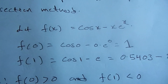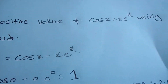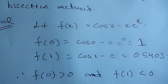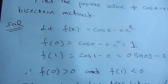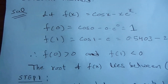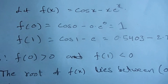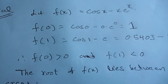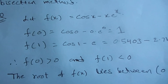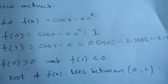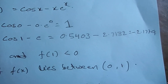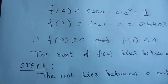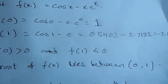Let f(x) equal to cos(x) minus x·eˣ. This is the given function. f(0) equals cos(0) minus 0·e⁰, which equals 1. f(1) equals cos(1) minus e, which is approximately 0.5403 minus 2.7192, giving a negative value. So f(0) is greater than 0, and f(1) is less than 0.